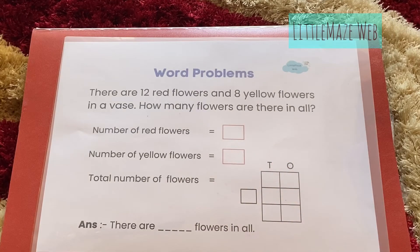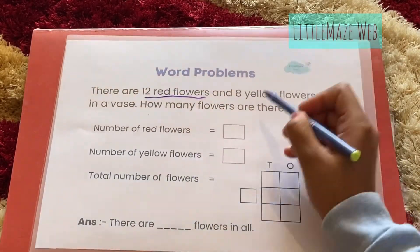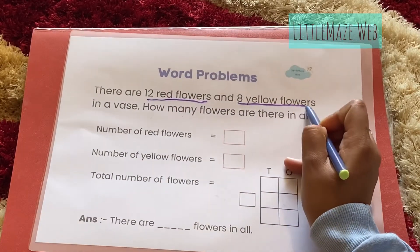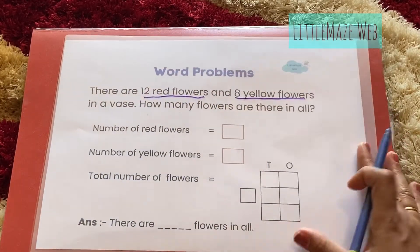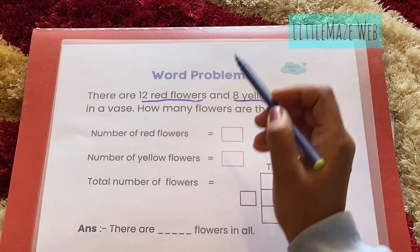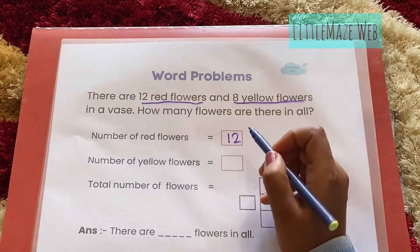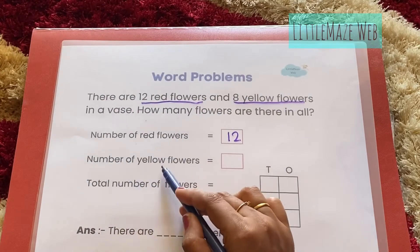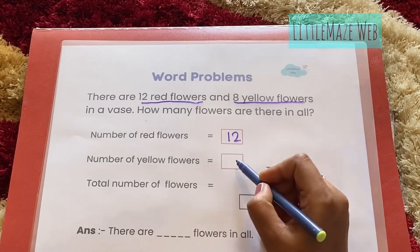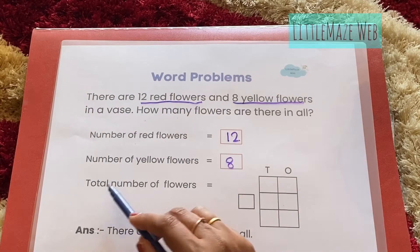First, we'll underline what is given in the question. We have 12 red flowers and 8 yellow flowers. Now let's look at the statements. Number of red flowers is 12, so we'll write 12 inside the box. Next, number of yellow flowers is 8, so we'll write 8 inside the box. Then we have total number of flowers.